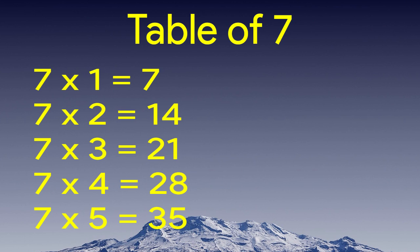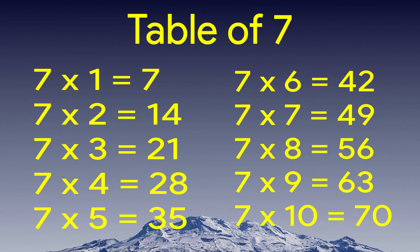Table of 7. 7 times 1 equals 7. 7 times 2 equals 14. 7 times 3 equals 21. 7 times 4 equals 28. 7 times 5 equals 35. 7 times 6 equals 42. 7 times 7 equals 49.